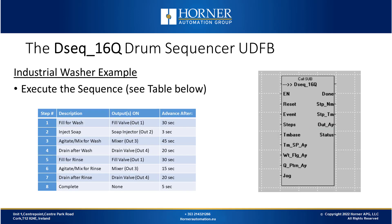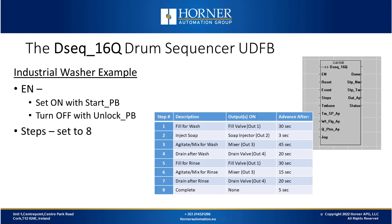Now we'll join the industrial washer example with our user-defined function block drum sequencer. We have a table on screen with a description for the eight steps, which outputs need to be on for each step, and what causes that step to advance to the next. In this example everything is time-based and we've documented the amount of elapsed time needed to cause advancement to occur.